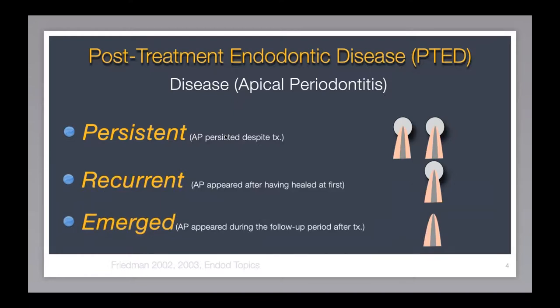The most disturbing is the emergent lesion, because here there was no lesion to start — that's usually a vital tooth, because vital teeth are free of microbes, so we don't expect apical periodontitis. Then after the treatment, at follow-up, we see that a lesion has developed. This is usually a sign of a non-sterile technique where microbes were introduced into the root canal system during treatment, or a poor root canal filling or top filling which allows coronal leakage.